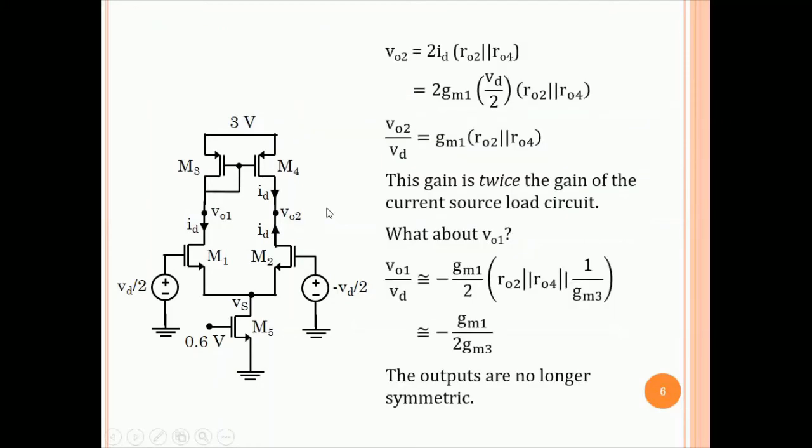So, we can write VO2 as 2 ID into RO2 parallel RO4. And ID we write as Gm into VD by 2. And so, we get the voltage gain of this circuit as Gm1 RO2 parallel RO4. This is only a qualitative analysis, by the way. This is twice the gain of the current source load circuit.